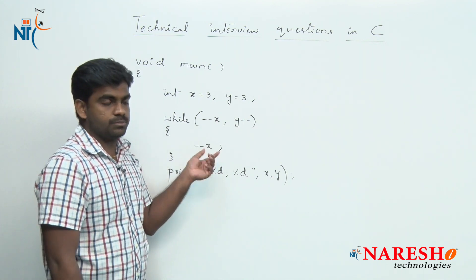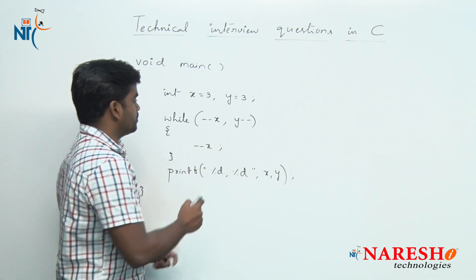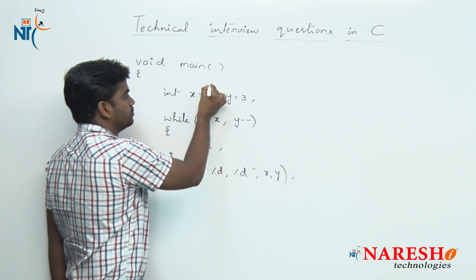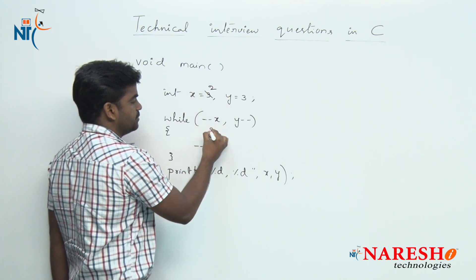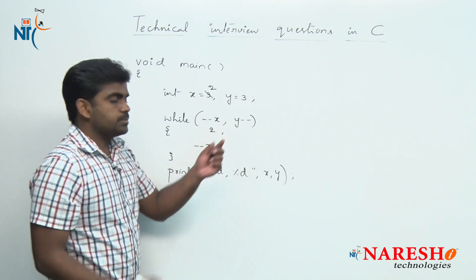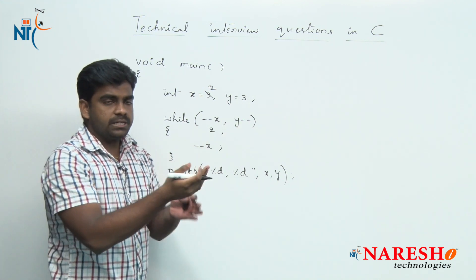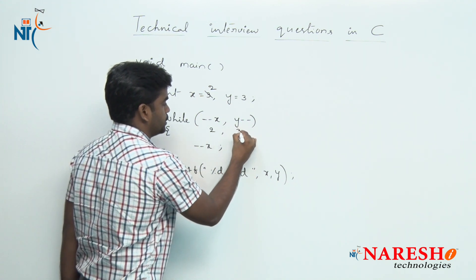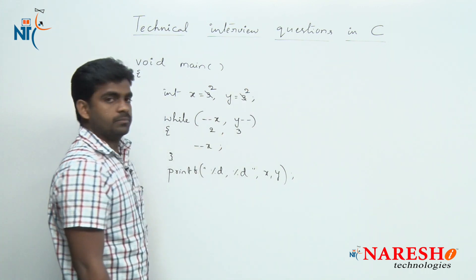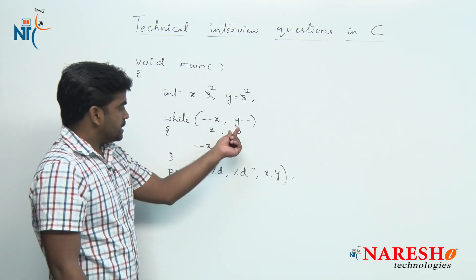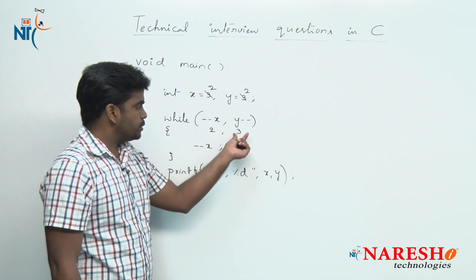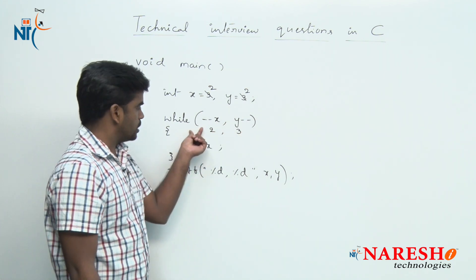Now we are evaluating this — observe. First, pre-decrement x: the value becomes 2. But why post-decrement? It is post-decrement, so first it will substitute 3 and then the value becomes 2. It checks the condition: 3 is the substituted value, and 3 is true, so control moves inside.